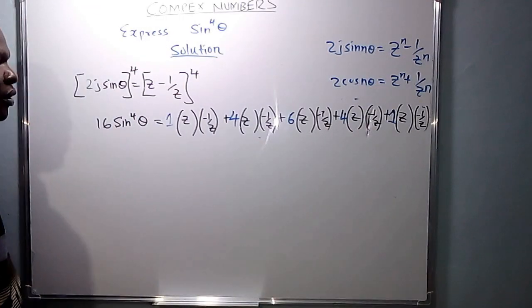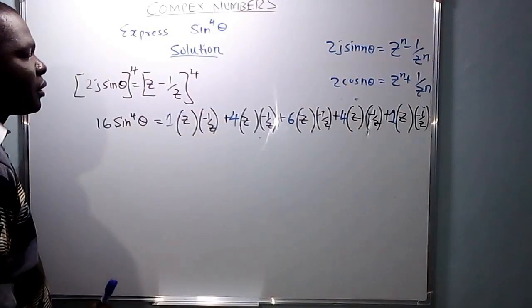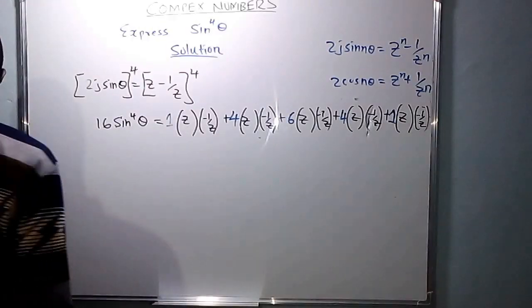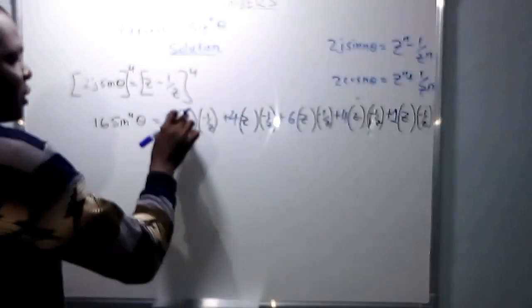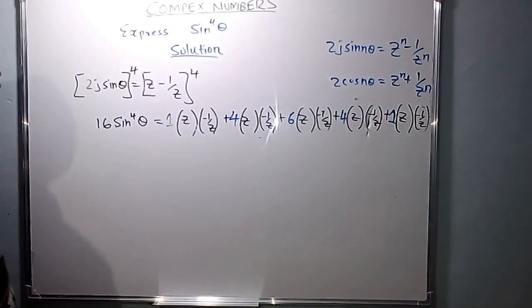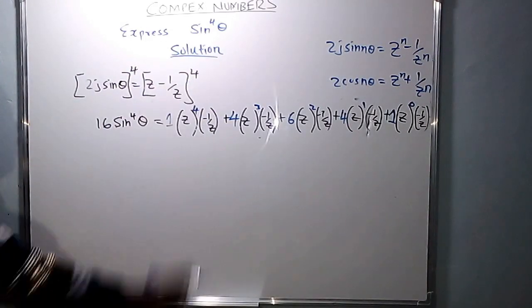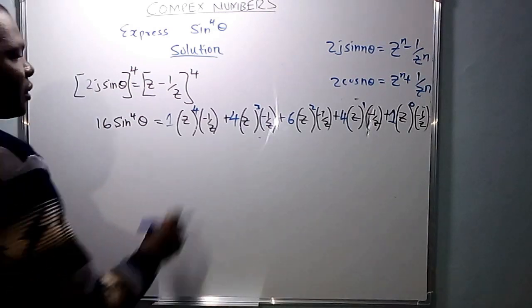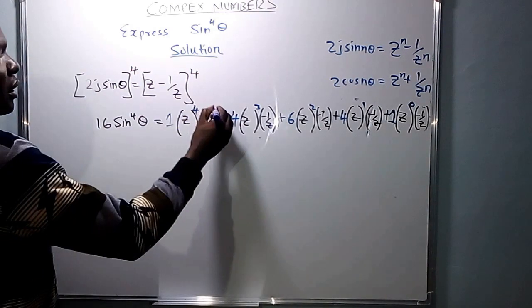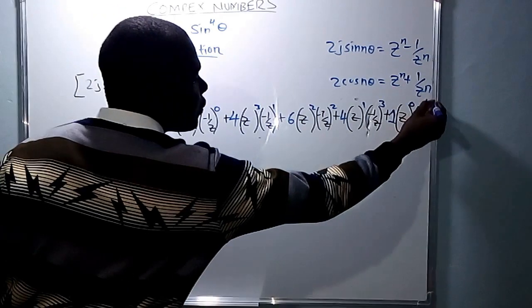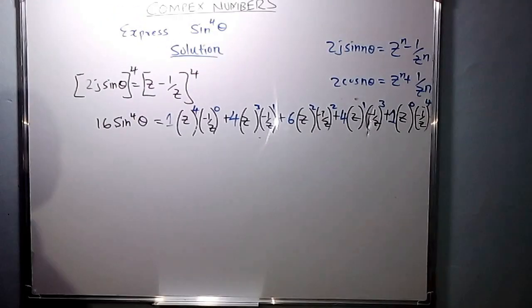We let the z powers descend starting at power 4, then 3, 2, 1, 0, to keep it neat. The 1 over z powers ascend starting from 0. Anything raised to power 0 is 1, so those terms simplify. For the coefficient of 1, we have z raised to power 4 and 1 over z raised to power 4; since negative raised to an even power is positive, 1 over z^4 is positive.